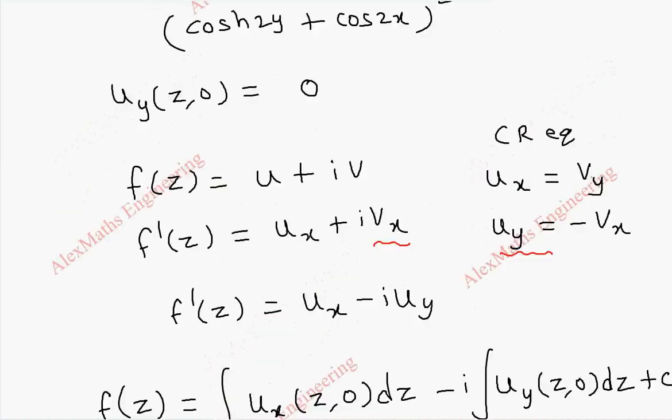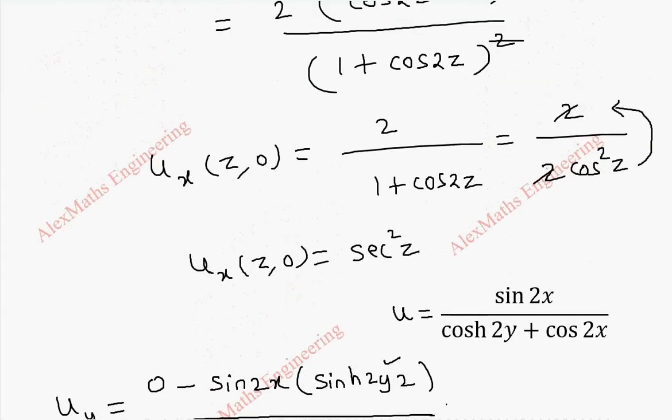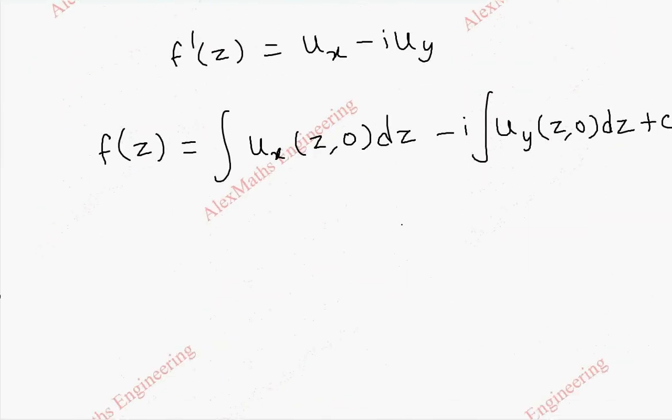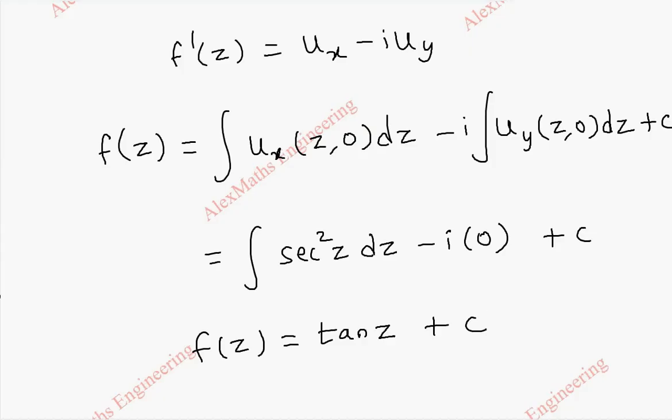And u_x we are going to replace which is secant square z. Integral secant square z dz. And the second number is 0 because u_y is 0. And we have a constant. Now f of z, this integration becomes tan z plus c. Thus we got the required analytic function.